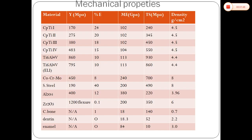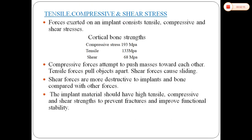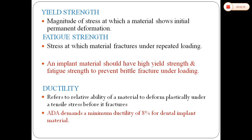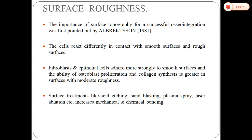The mechanical properties are shown in the table as in the diagram. The physical and mechanical properties, including modulus of elasticity, have already been discussed by Dr. Senghor in earlier classes, so I am not going deep into this. These properties include tensile and compressive shear stress, yield strength, fatigue strength, ductility, hardness, and toughness. Regarding physical properties, the importance of surface topography for successful osseointegration was first pointed out by Bergson in 1981.